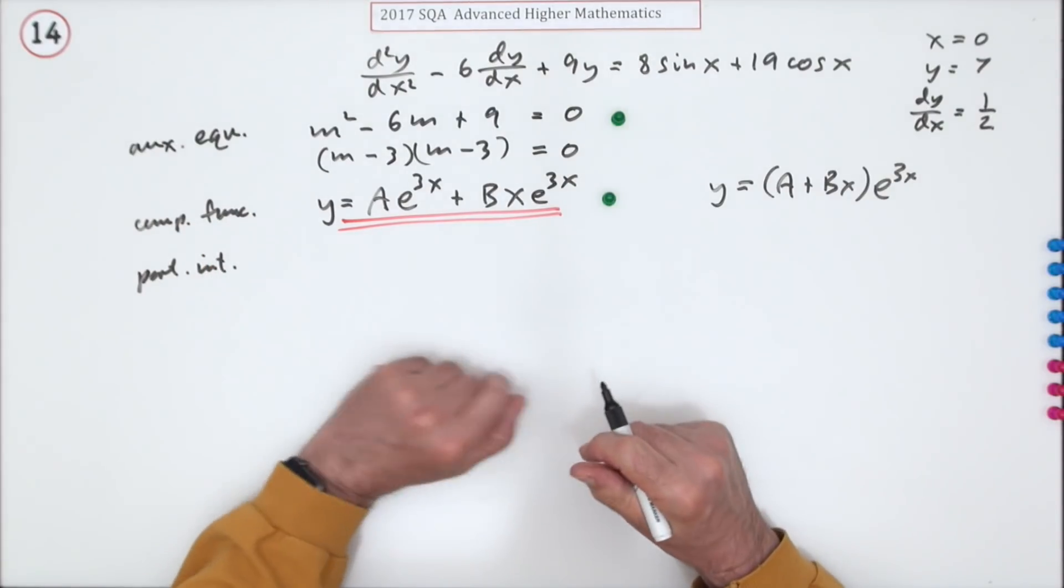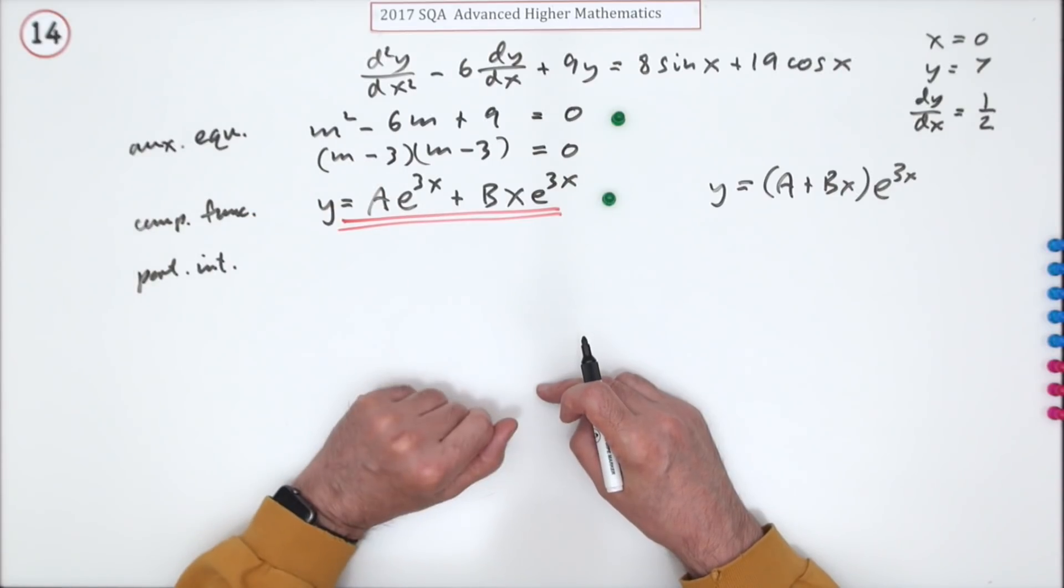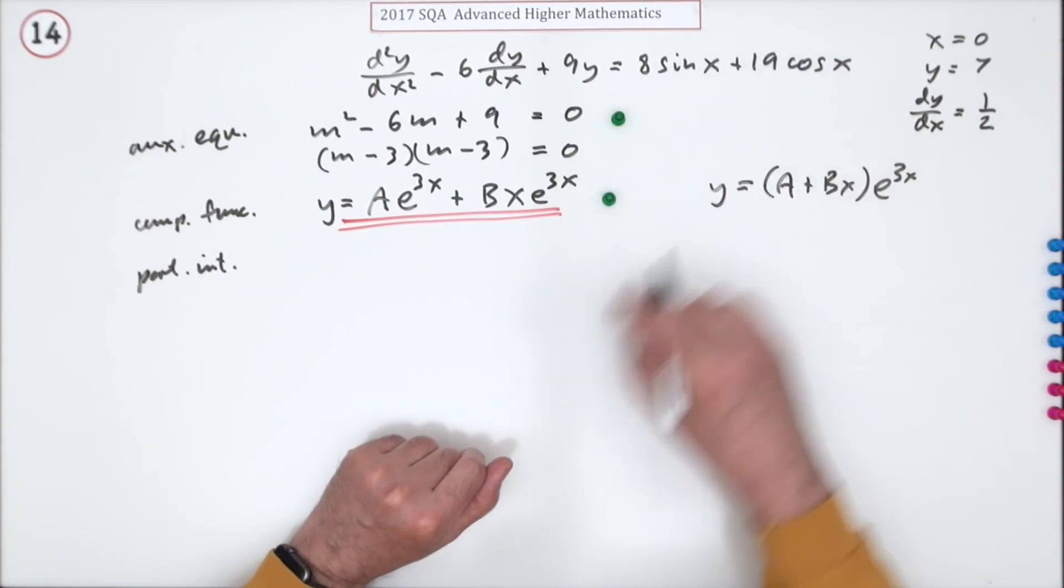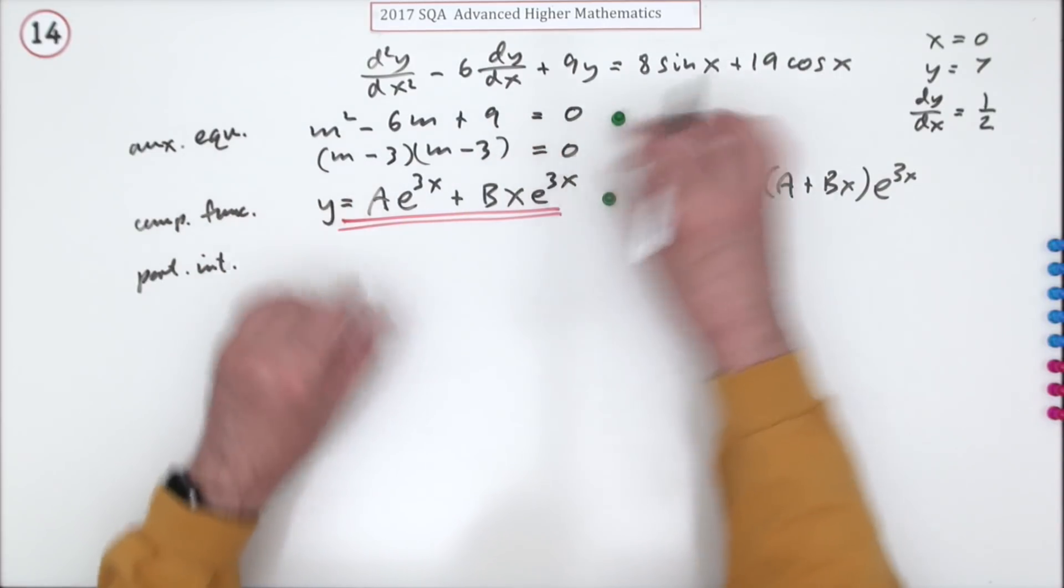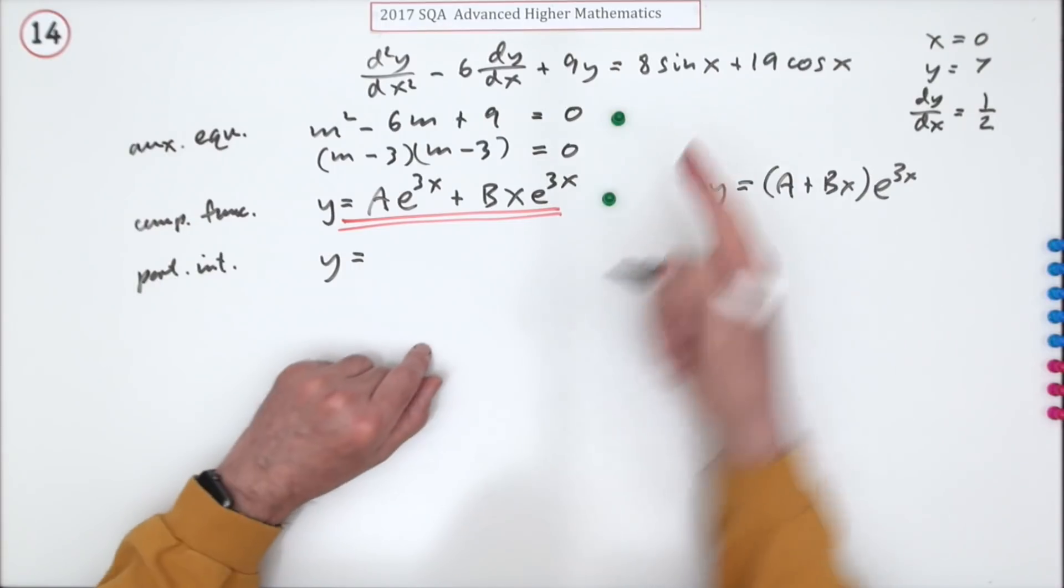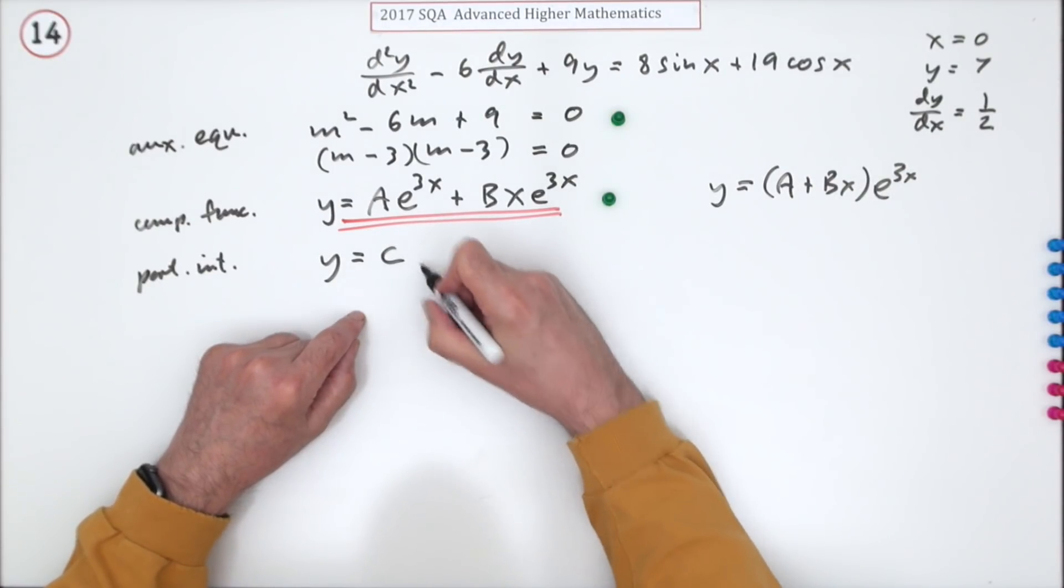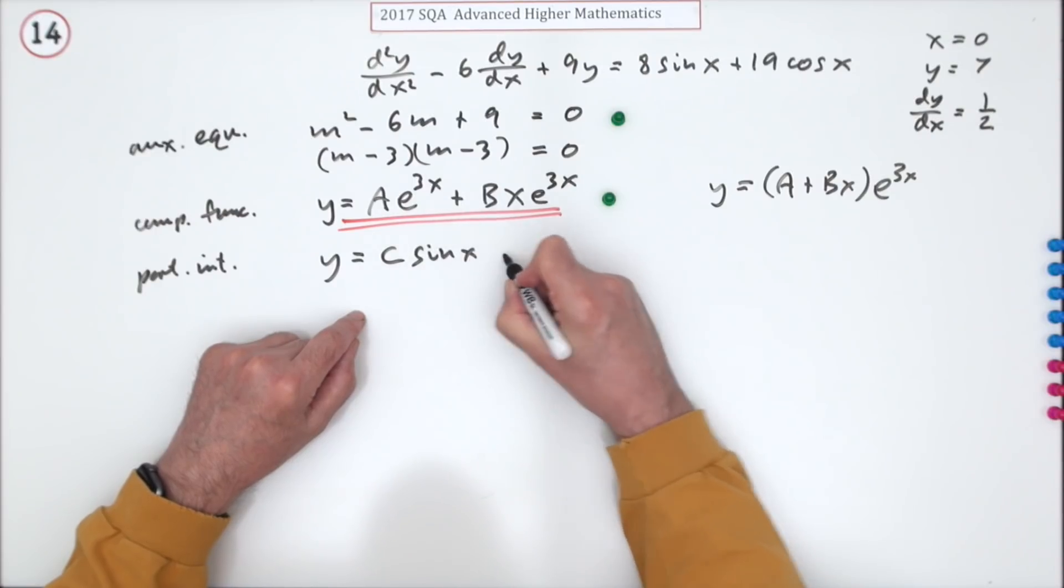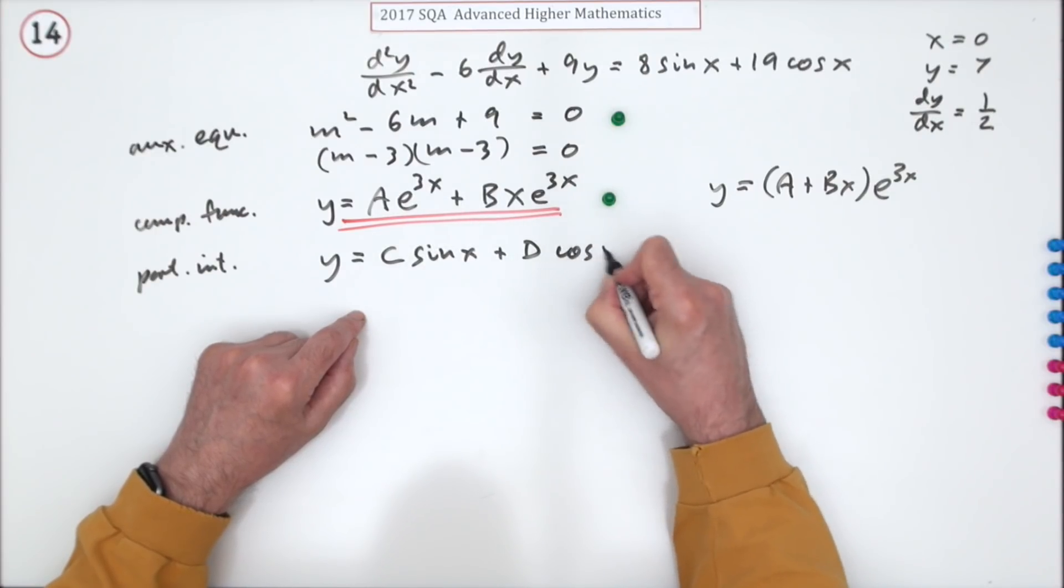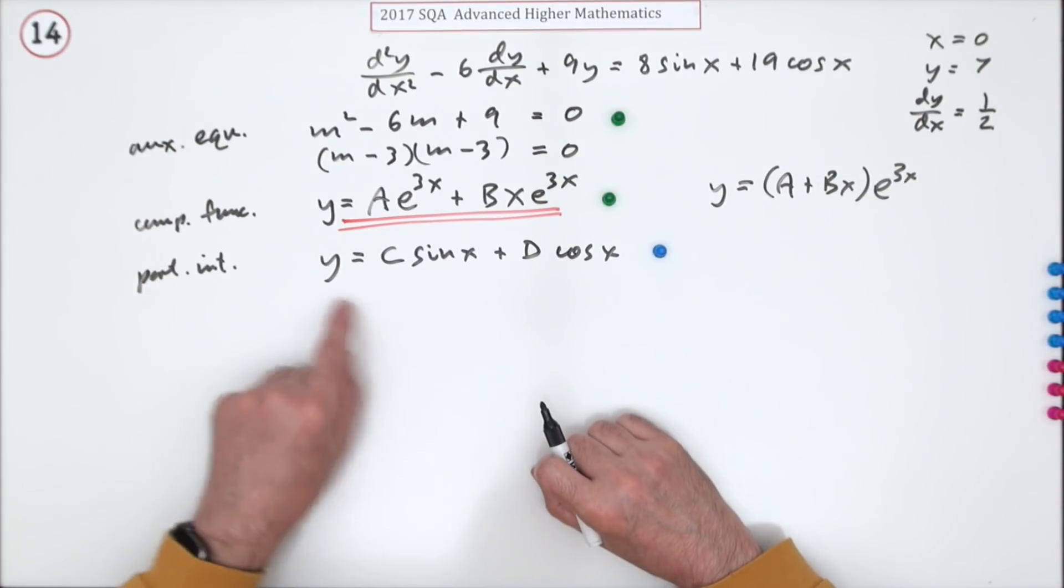Now the particular integral - it was a bit of a relief it turned out to be that and not one where you had complex roots, which could have clashed with this and made it a lot harder. But that's completely different from this, so you can safely say for my particular integral I'll just choose it of the same form. I've used A and B already so C sin x plus D cos x. Doing that gets a mark.